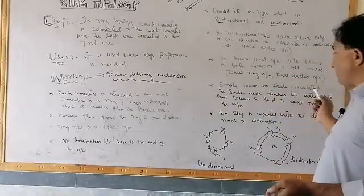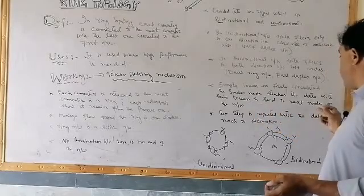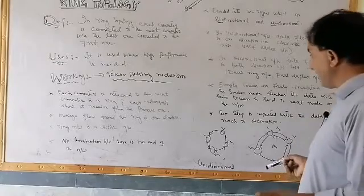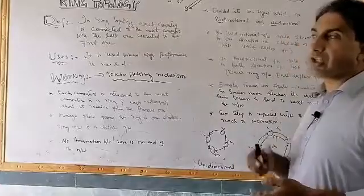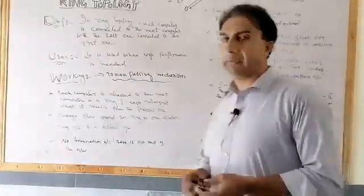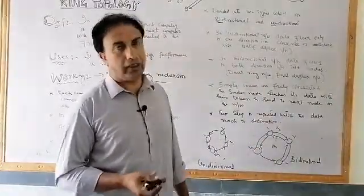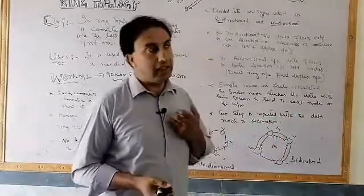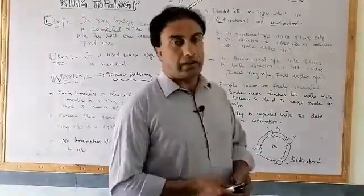Empty tokens freely circulate in the network and are sent to the next node. The node which wants to transmit data will capture the token, attach its data, and send it forward. Each node receives it, reads it, and if it is not the destination, passes it on. This step is repeated until the data reaches the destination.